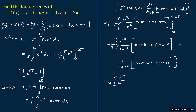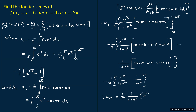Substituting limits: upper limit x = 2π gives e^{2π}/(1+n²) × (cos(2nπ) + n·sin(2nπ)) = e^{2π}/(1+n²) × (1 + 0) = e^{2π}/(1+n²). Lower limit x = 0 gives 1/(1+n²) × (cos(0) + n·sin(0)) = 1/(1+n²). Therefore aₙ = (1/π) × (1/(1+n²)) × (e^{2π} - 1).